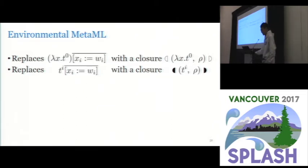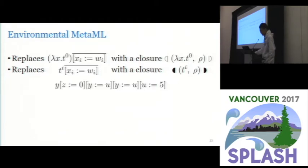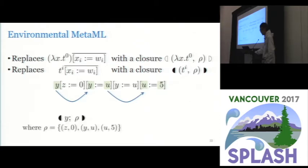Let's consider an example from suspended MetaML. So this newly highlighted part is of concern particularly. So for this, the variable Y is bound to U which is later bound to 5. Suppose we convert it to a closure like this. To evaluate it, we look up the environment. Y is bound to U and it steps to U which is a free variable. It is certainly not what we want.